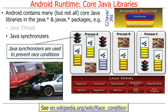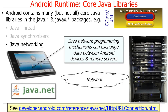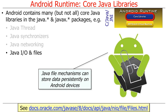When this happens, corruption can occur, which causes all kinds of strange behaviors. Another set of packages contained in the core Java libraries are the Java networking classes. These Java network programming mechanisms can be used to exchange data between Android devices and remote servers, and they typically include various classes like Socket and various factories for creating sockets. There's also a set of core Java libraries that relate to java.io and files. The Java file mechanisms can be used to store data persistently on Android devices, as long as you follow the permissions model properly.